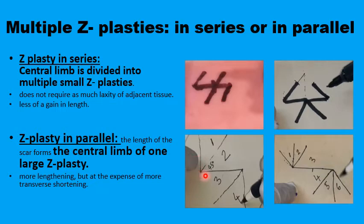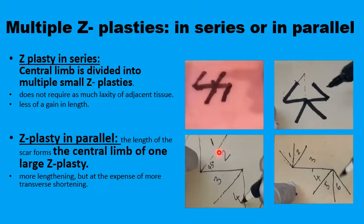The other type — z-plasty in parallel — actually offers maximum extension of the central scar. The central limb remains the same, but by doing the multiple in-parallel z-plasty, you extend the wound almost 100 to 150 percent of its original length, on the expense of using more tissues from the transverse direction. So if you have less transverse tissue, in-series is preferred; if you want more extension of the central limb, in-parallel is used.